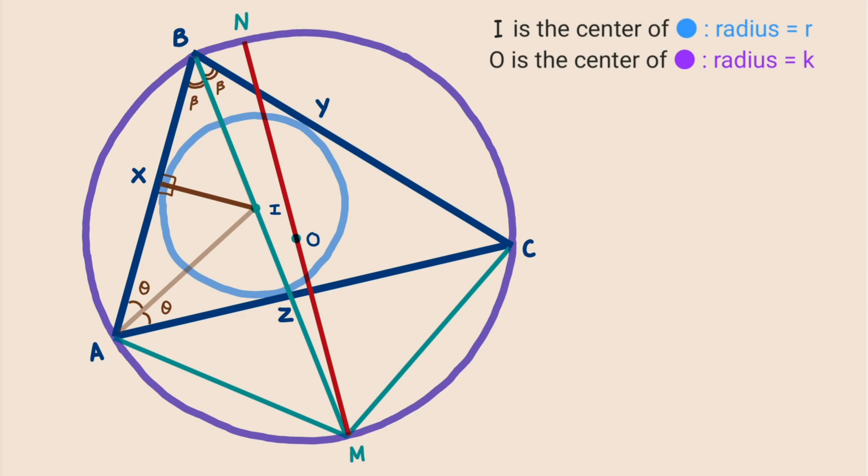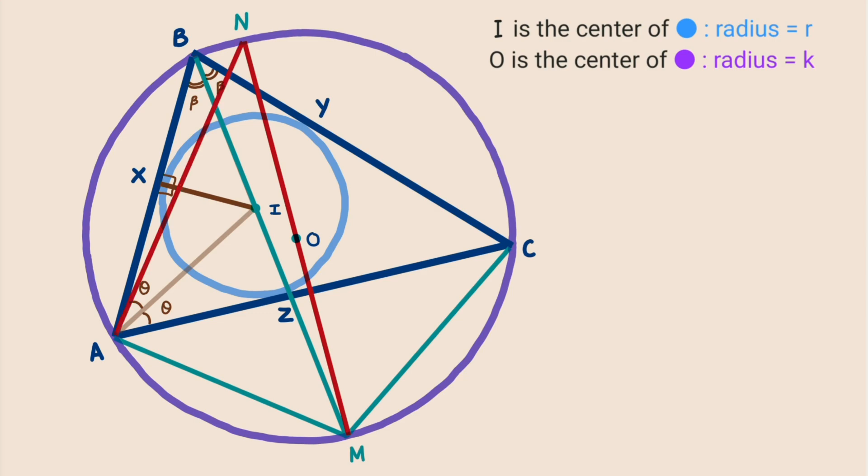We join points A and N with a line segment. By the theorem that an angle inscribed in a semicircle is always 90 degrees, since MN is the diameter, angle MAN is 90 degrees. By the theorem that angles subtended by the same chord in the same segment are equal, taking common chord MA, angle MBA equals angle MNA. Since angle MBA has value β, therefore angle MNA also equals β.